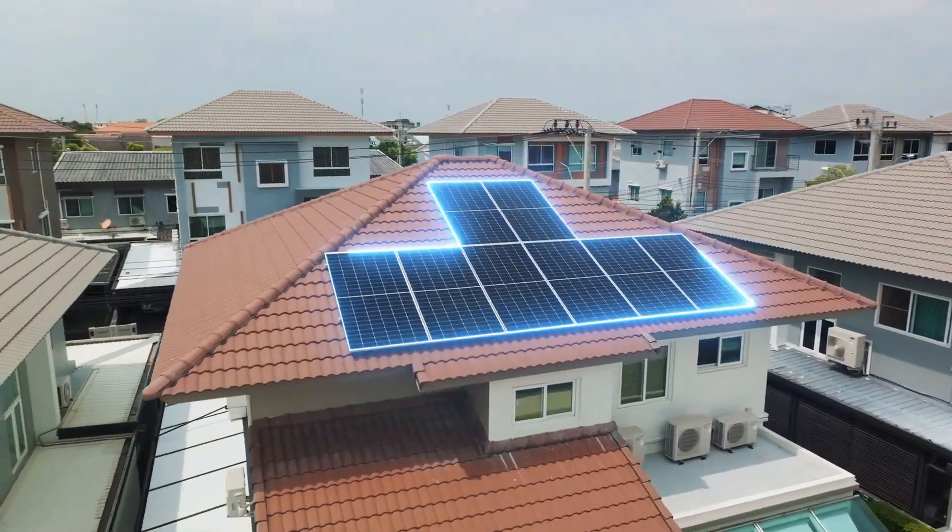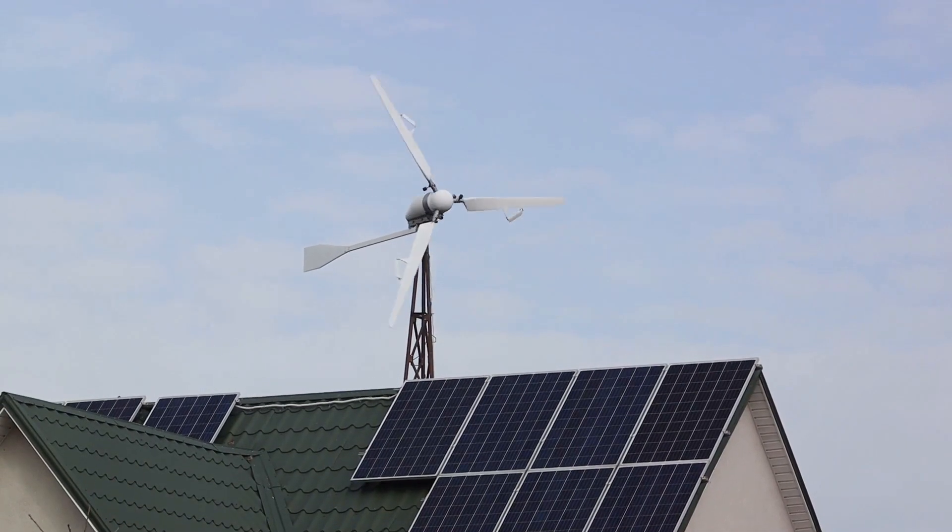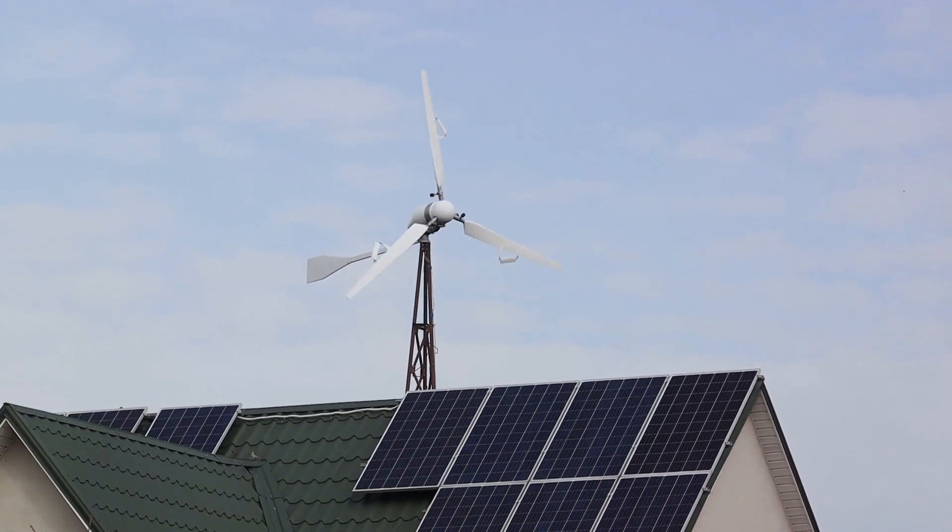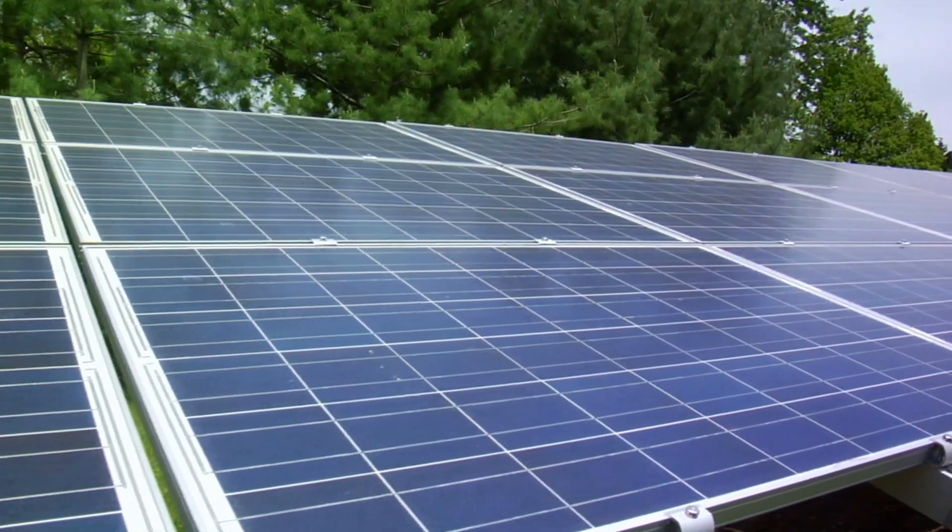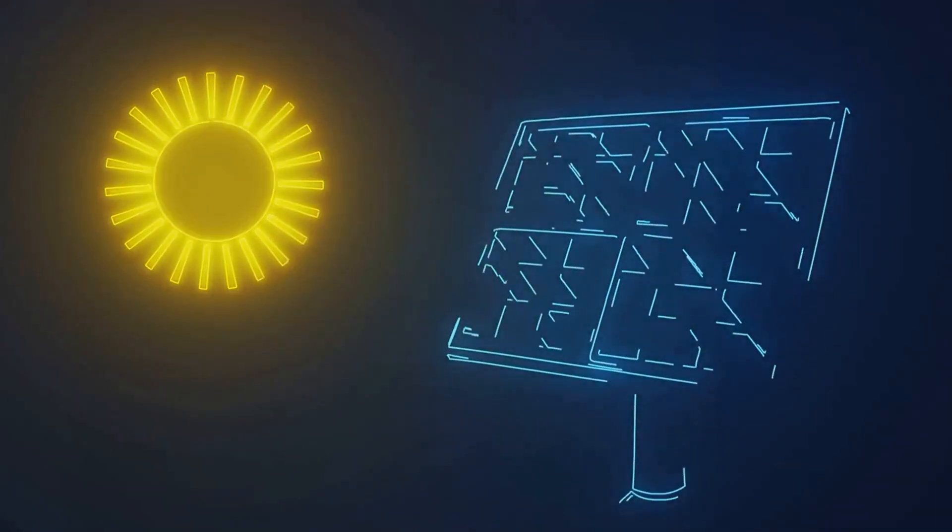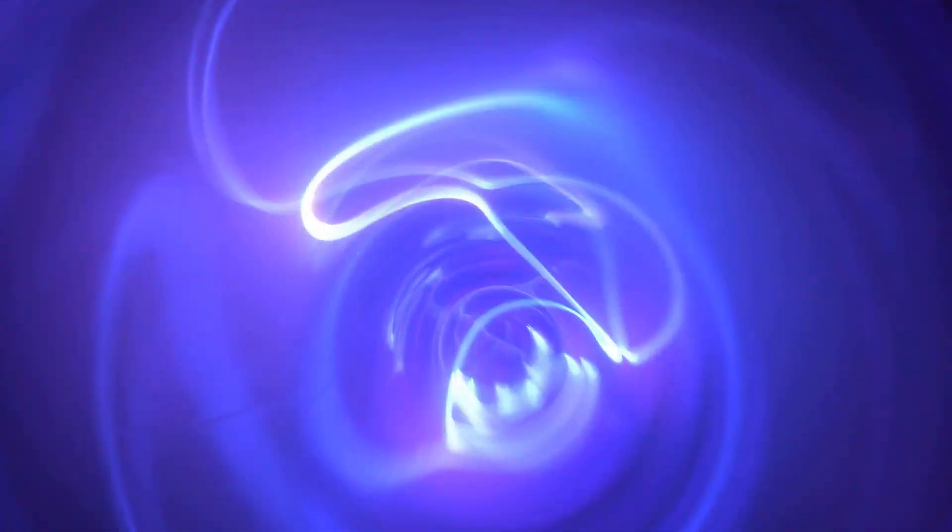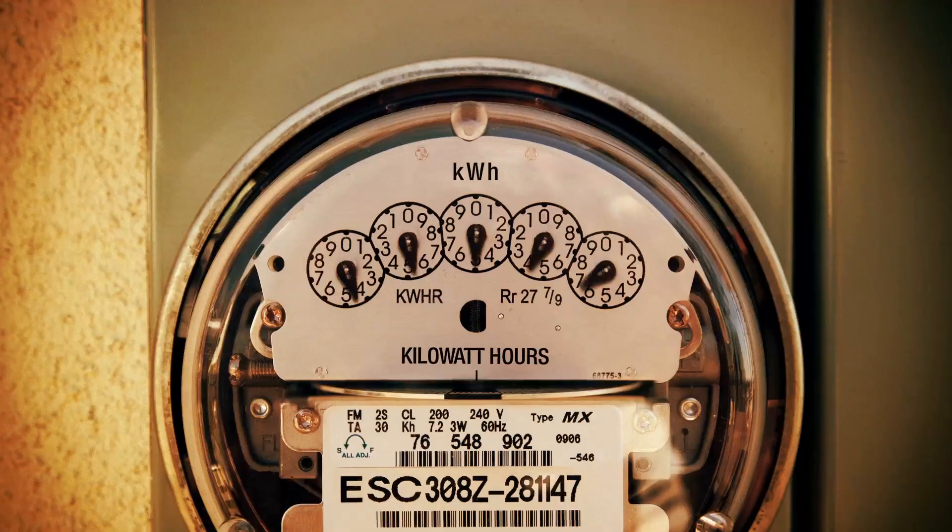Net metering is an elegant system that works hand-in-hand with your renewable energy sources, like solar panels or wind turbines. Once you've installed these on your property, they start generating electricity. This electricity is used to power your home, and any excess is sent back to the grid. Now here's where the magic happens.